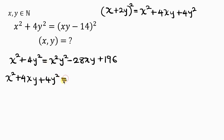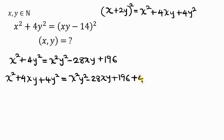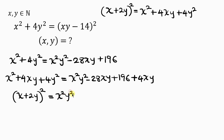Setting that equal to the right-hand side: x squared y squared minus 28xy plus 196. Remember, as we add 4xy to the left we must also add it to the right. So the right-hand side becomes x squared y squared minus 24xy plus 196, and the left-hand side is the perfect square (x + 2y) squared.